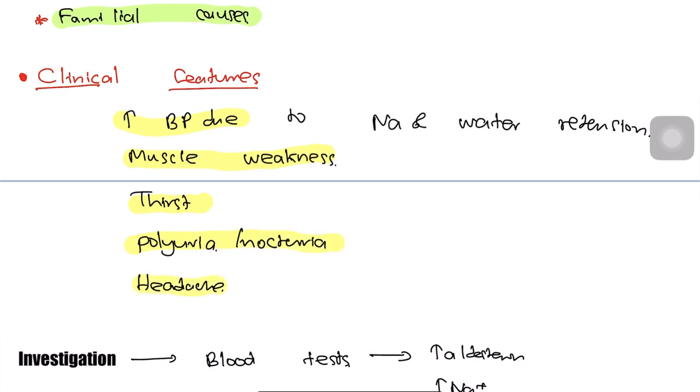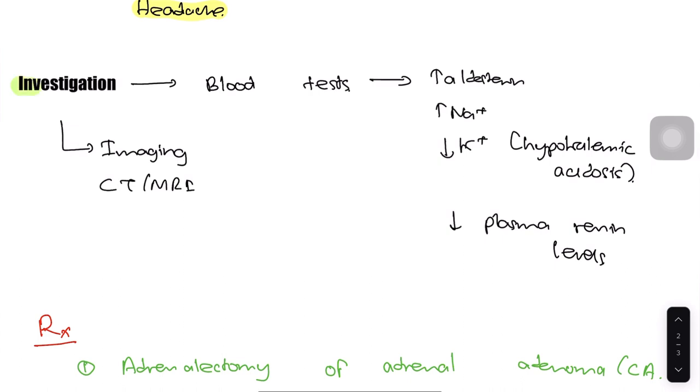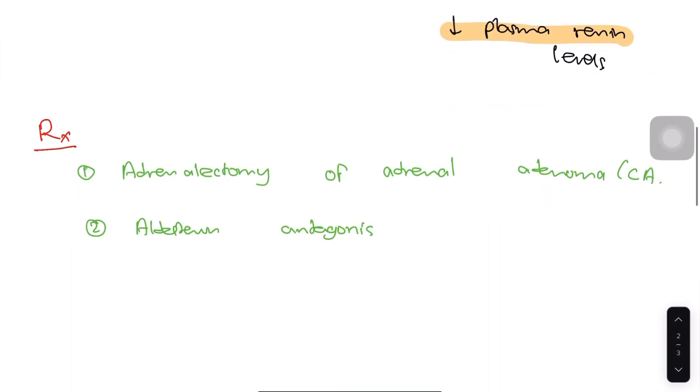The investigation process of hyperaldosteronism includes blood tests and imaging studies. In blood tests, we can see increased aldosterone level, increased sodium, reduced potassium, and reduced plasma renin levels.